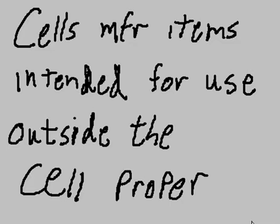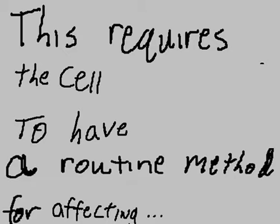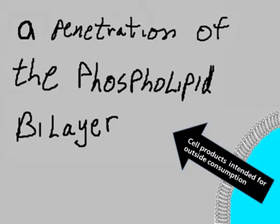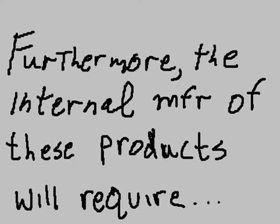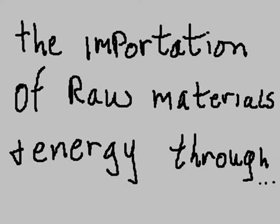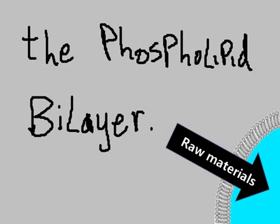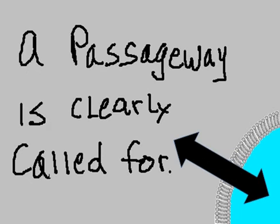Cells manufacture items intended for use outside the cell proper. This requires the cell to have a routine method for affecting a penetration of the phospholipid bilayer. Furthermore, the internal manufacture of these products will require the importation of raw materials and energy through the phospholipid bilayer. A passageway is clearly called for.